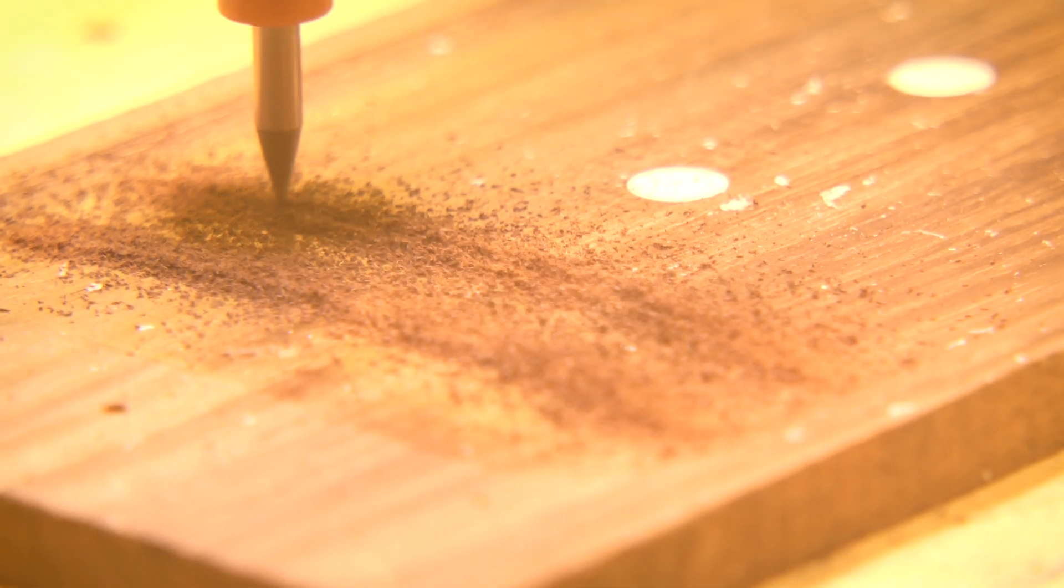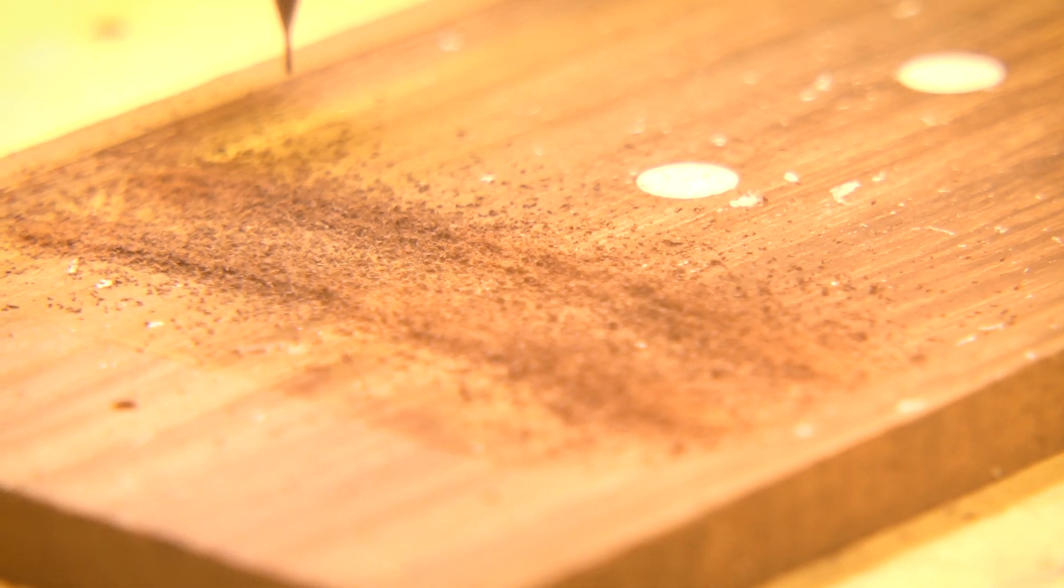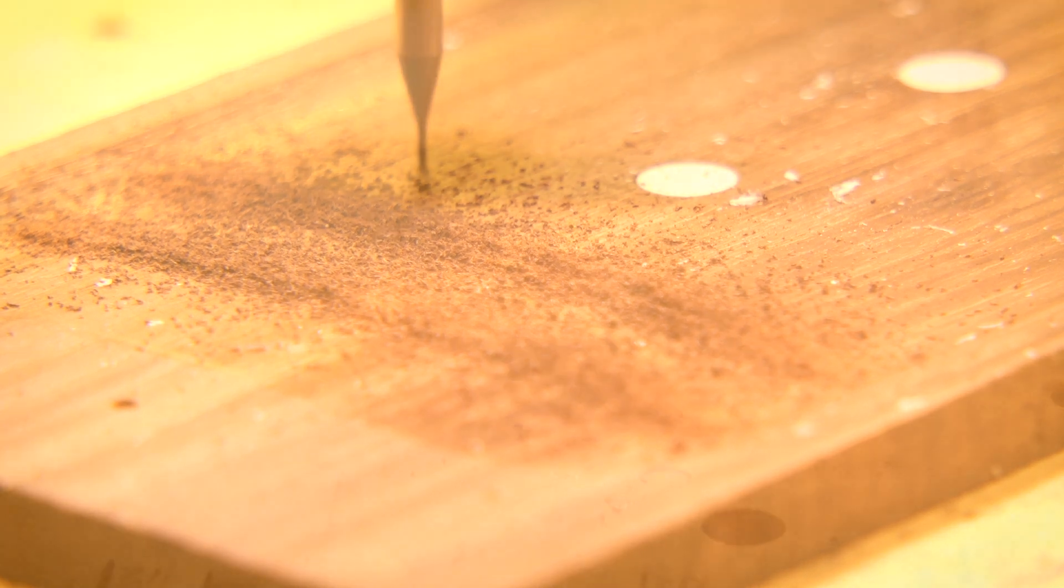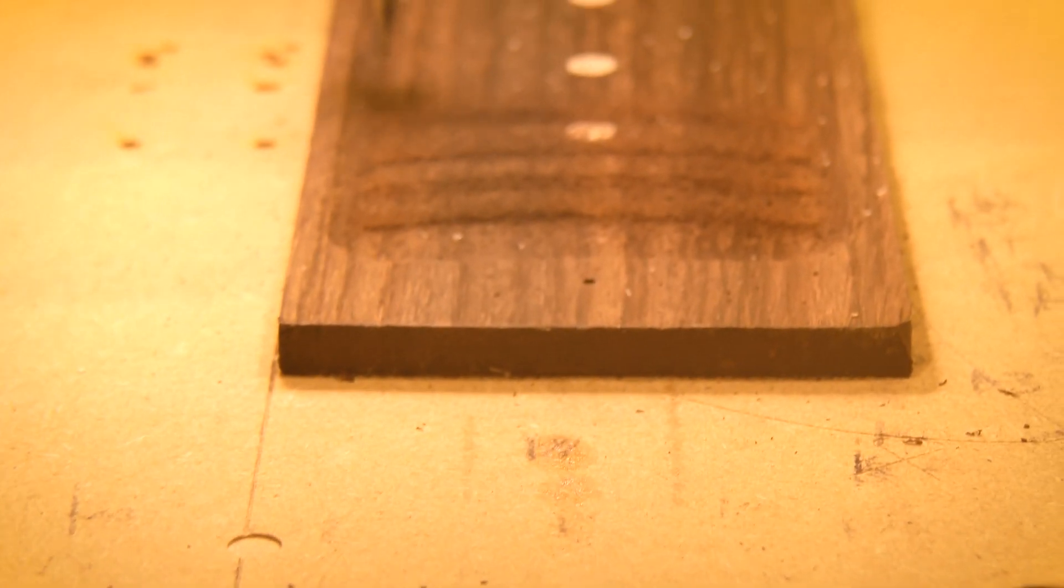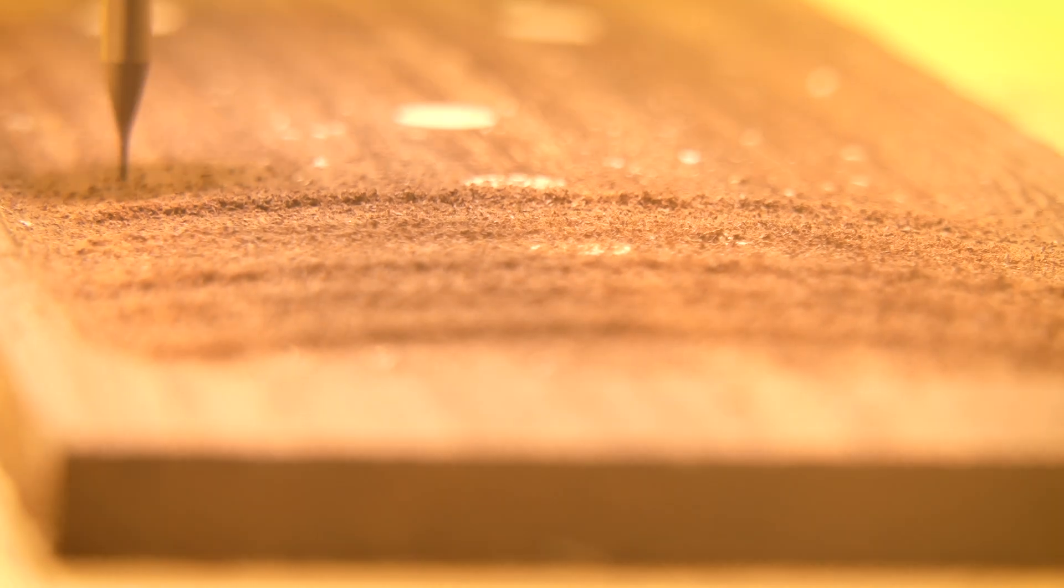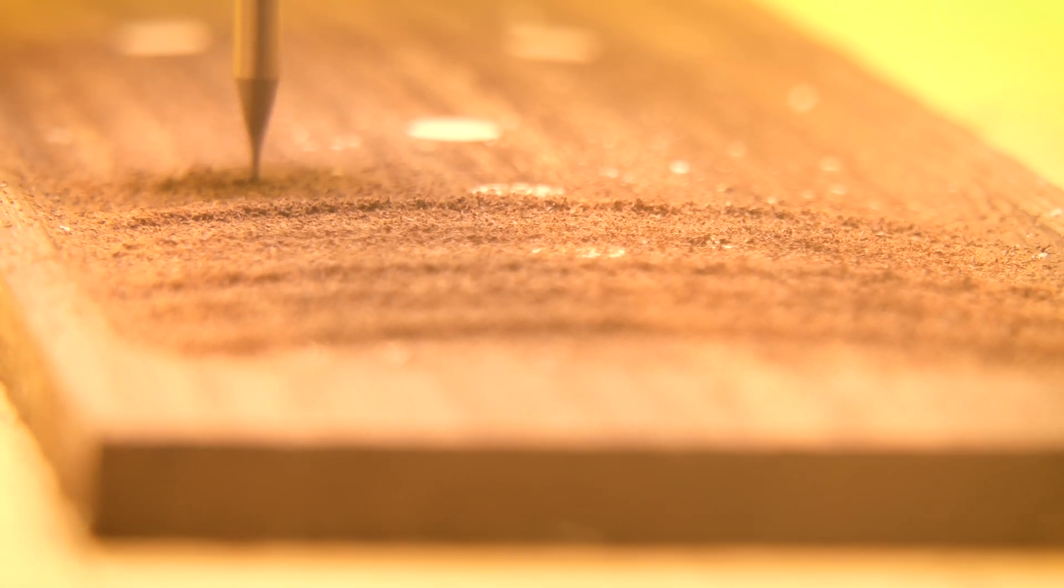My method begins with thickness sanding the fretboard blanks to a quarter of an inch. For clean inlay, I cut the pockets and glue in the material, milling the fretboard radius through the blank and inlay material together.